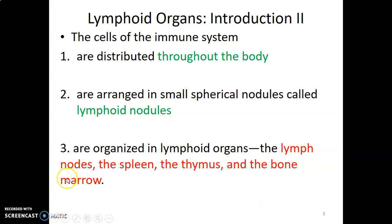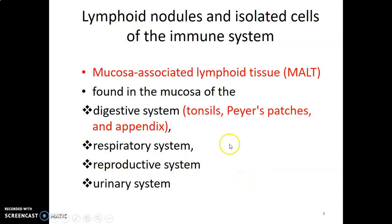Examples of lymphoid organs include lymph nodes, spleen, thymus, and bone marrow. The lymphoid nodules are located in different areas, including mucosa-associated lymphoid tissue wherever there is mucosa.